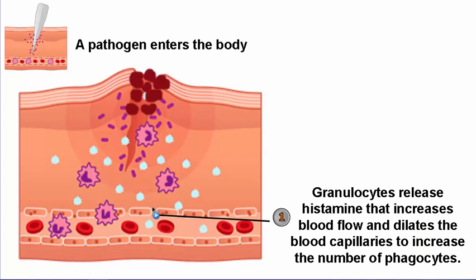First, the granulocytes in that tissue release histamine. Histamine is a chemical substance that causes the blood capillary to dilate, becoming open, and the blood flow increases. When blood flow increases, more and more phagocytes come to the wounded area where there are pathogens.